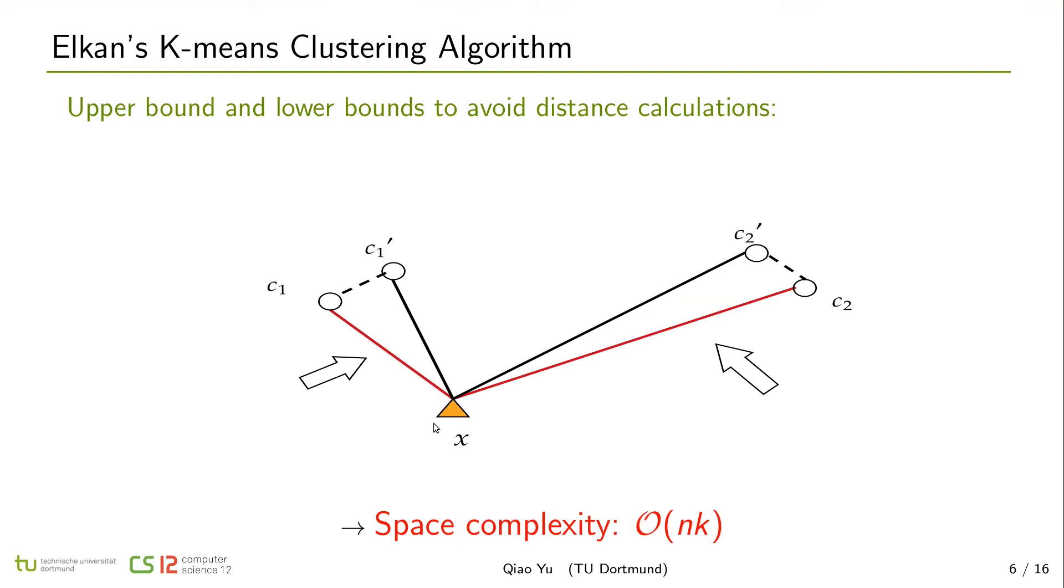At the next iteration, after recalculating the means of centers, c1 will be moved to c1' and c2 move to c2'. At the standard k-means, we calculate distances from x to c1' and x to c2'. But in Elkan's k-means, as the previous iteration has calculated x c1 and x c2,